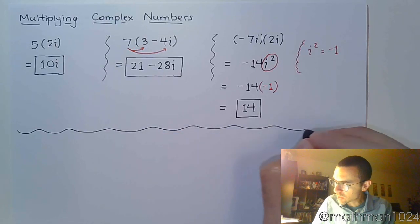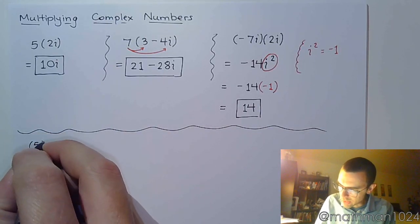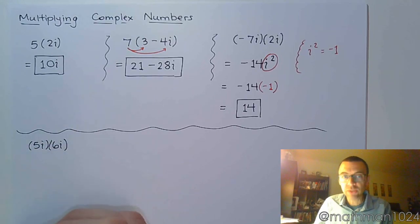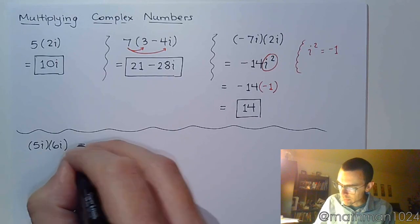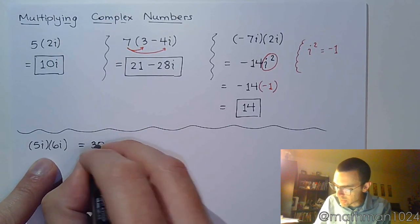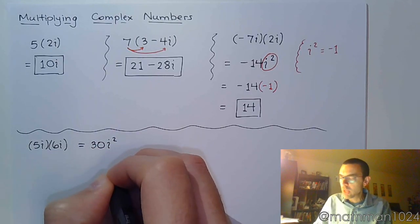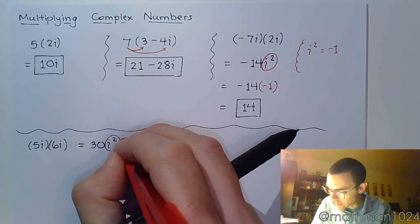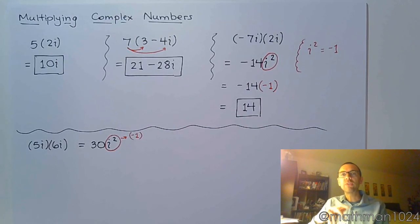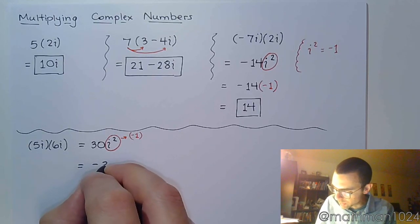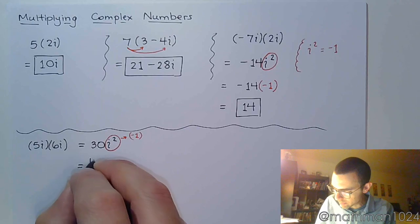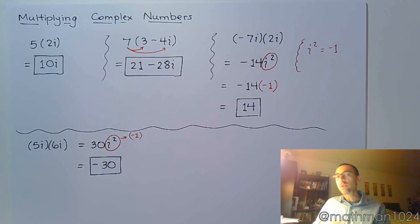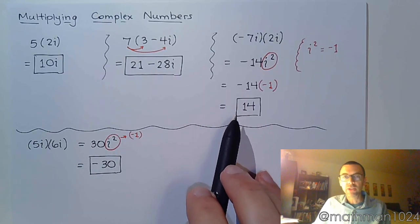Let's do another quick little guy. If I do 5i times 6i, well, 5 times 6 is just 30. The i times i is i squared. But as we saw in the previous example, this i squared becomes a factor of negative 1. So this becomes negative 1. Make sure you understand this is not 30 minus 1. This is 30 times negative 1. So we end up with negative 30. So anytime you've got that i squared, it's going to change the sign of what it's connected to. It changed the 30 to negative 30. It changed the negative 14 to positive 14.